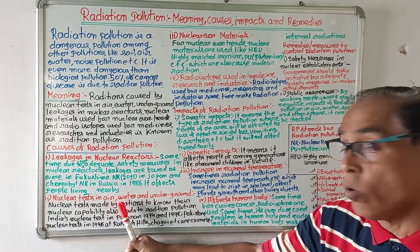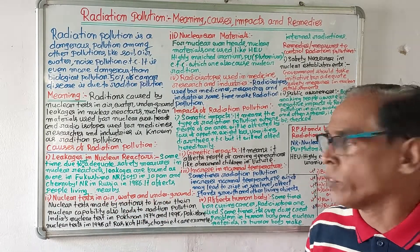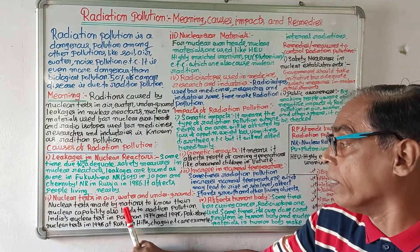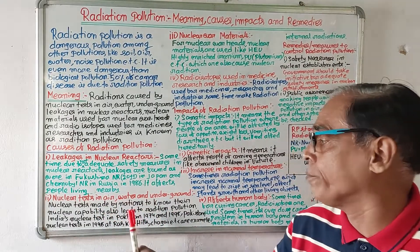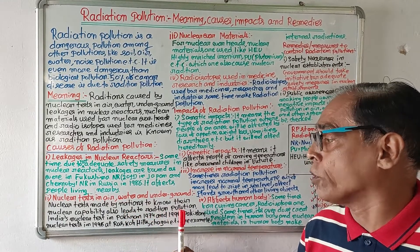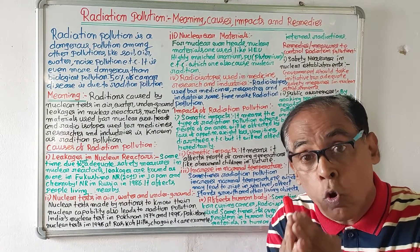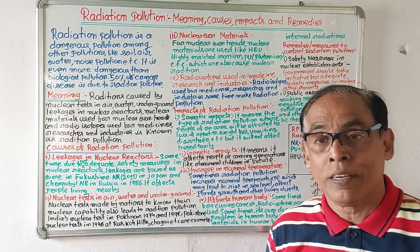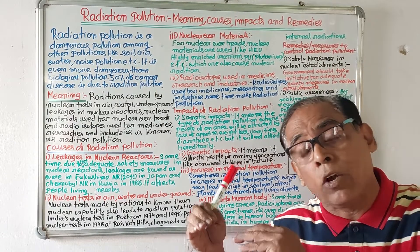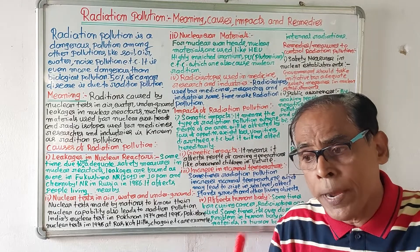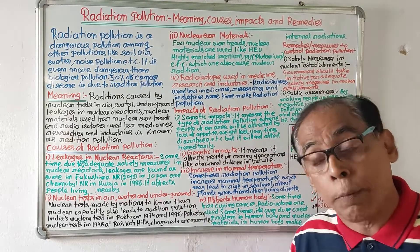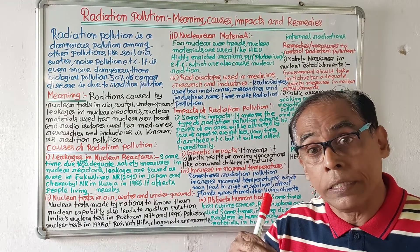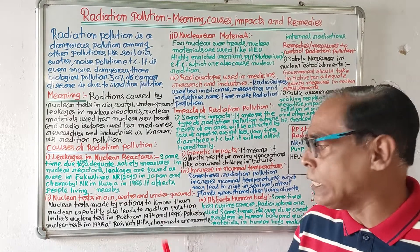Number two: nuclear tests in air, water, and underground. Nuclear tests made by nations to know their nuclear capability also lead to radiation pollution. Sometimes nations, in order to know their nuclear capability, conduct nuclear tests in air, water, and underground — and whenever such tests are made, radiations are found and it may cause radiation pollution.